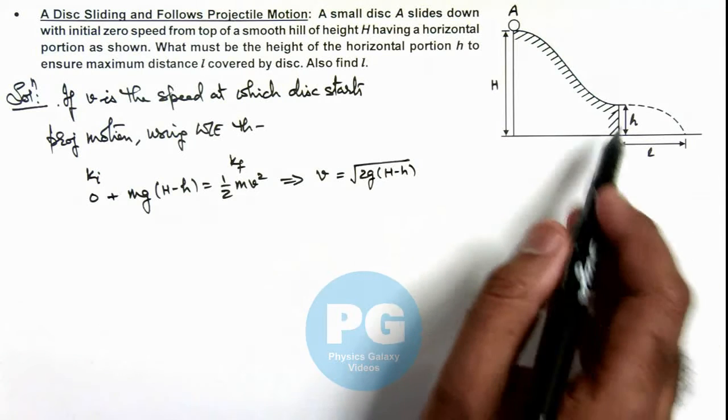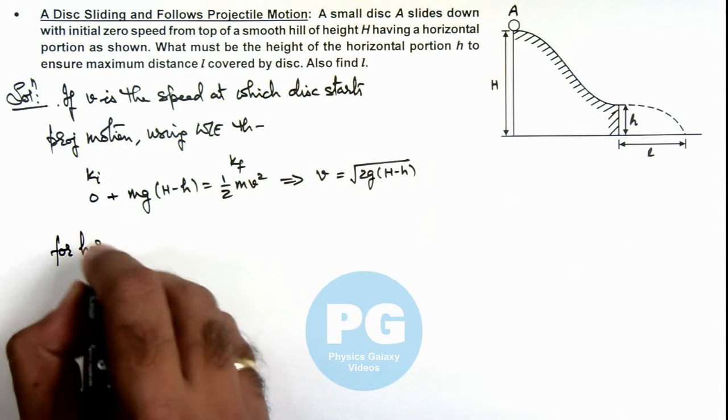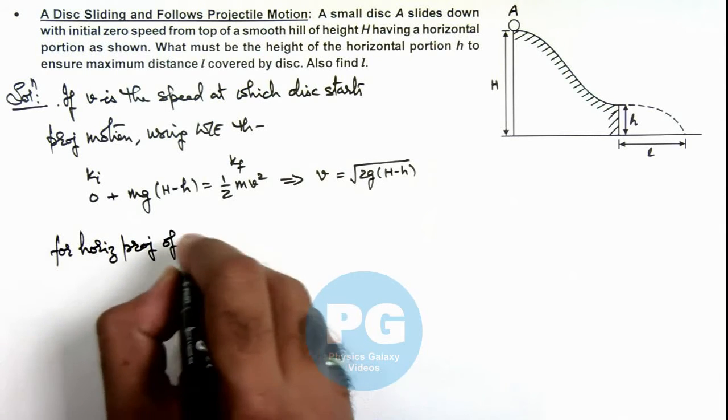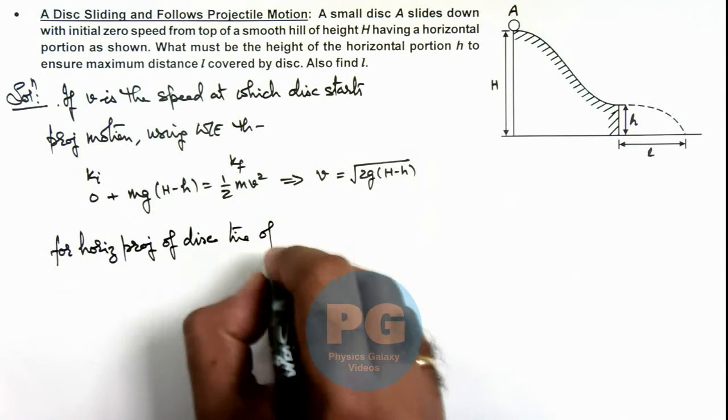And here as it is horizontally projected, we can write for horizontal projection of disc, time of flight can be written as